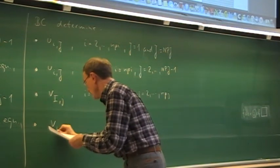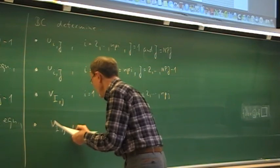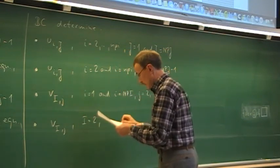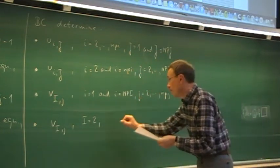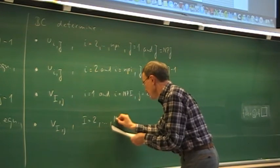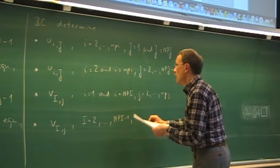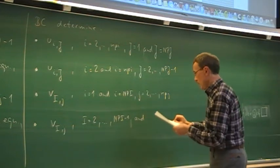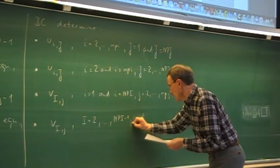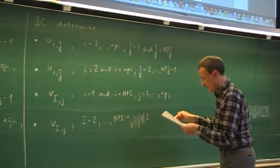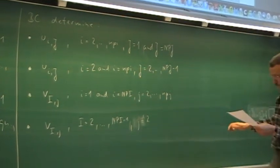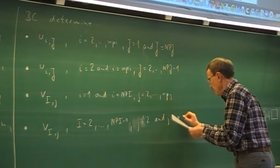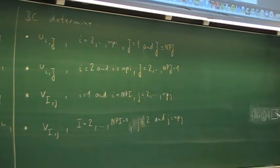And finally, the last component in the y-direction, v_{i,j}, determined at capital I from 2 to nPi minus 1, and for j equal to 2, that is the lower boundary (bottom), and j equal to nPj, that is the upper one. So there we need the boundary conditions.